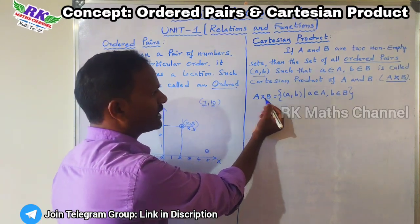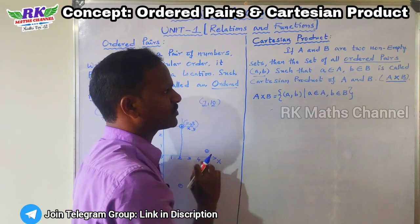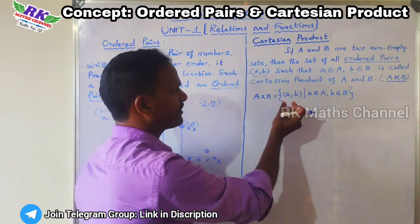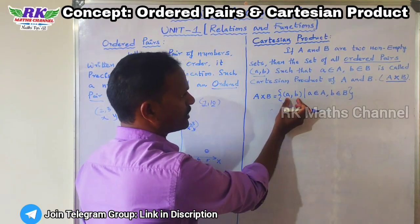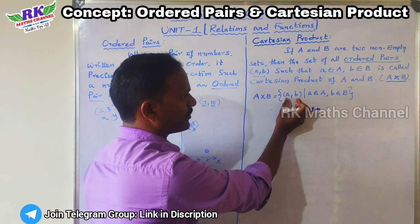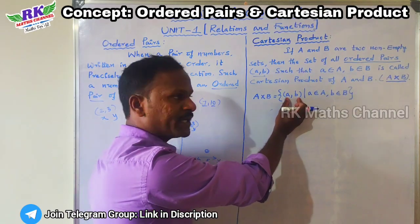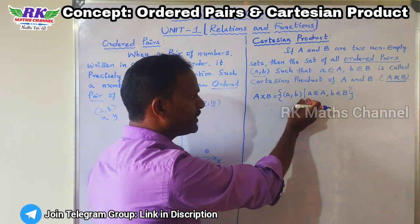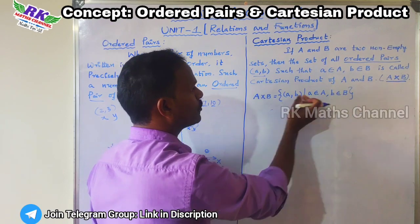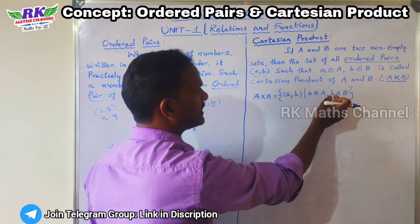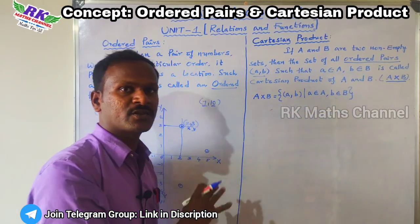So A and B Cartesian product — simple condition, set-builder formula: A cross B equals the set of all ordered pairs (a,b) such that a is an element of set A and b is an element of set B.